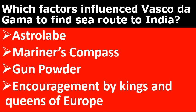Which factors influenced Vasco da Gama to find sea routes to India? The factors were: the astrolabe, mariner's compass, gunpowder, encouragement by kings and queens of Europe, and accurate geographical maps.